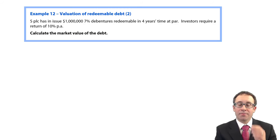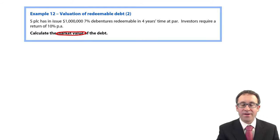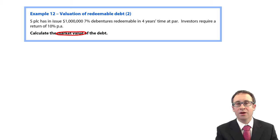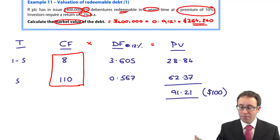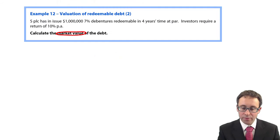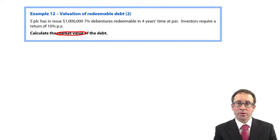You've got another example, example number 12, the value of redeemable debt number two. Like we said before, the only way to get good at these questions is to practice them. Have a go and practice working out the market value of this particular redeemable bond. Lay it out in exactly the same way as what we did on the previous example. So stop the video and then rejoin us again in a moment.